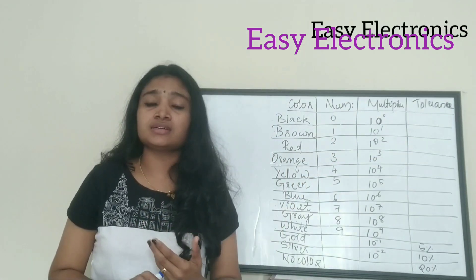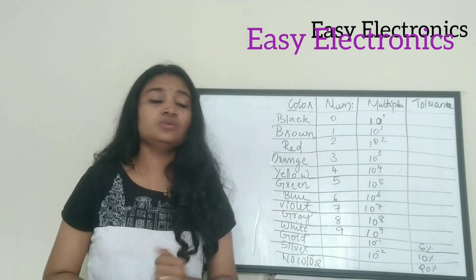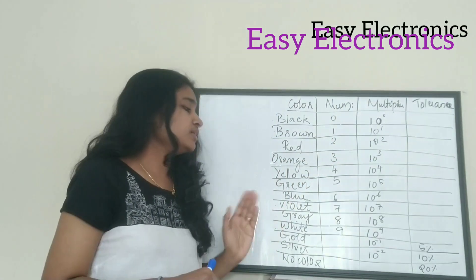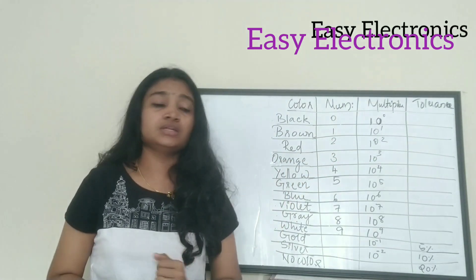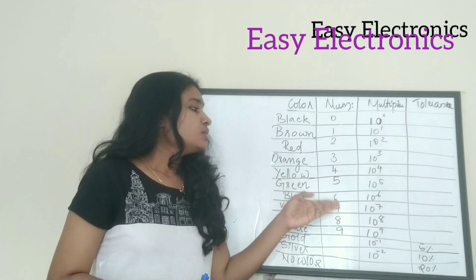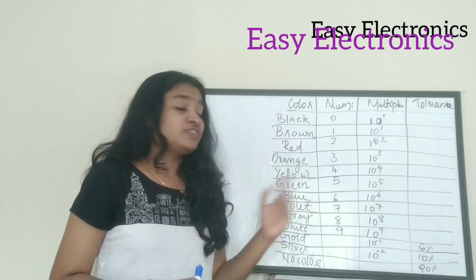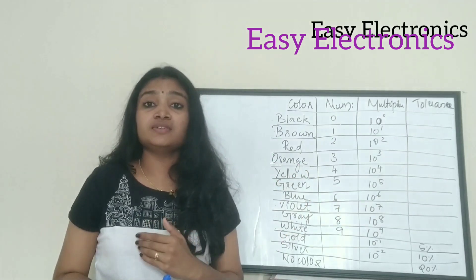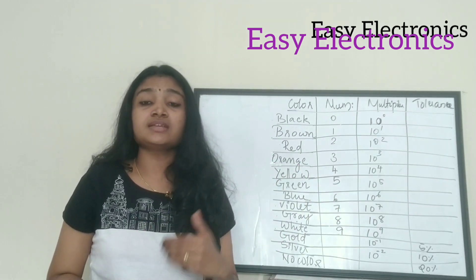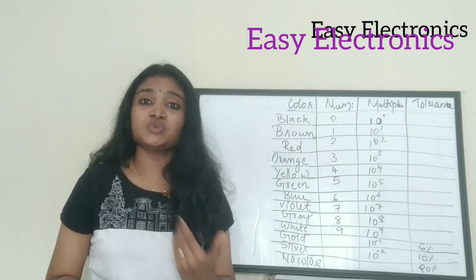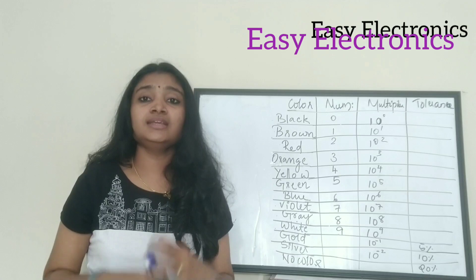The last column is tolerance. The tolerance values are: gold is 5%, silver is 10%, and no color is 20%.